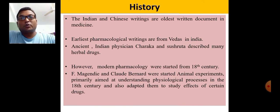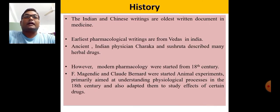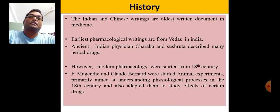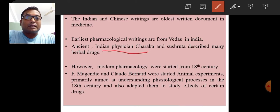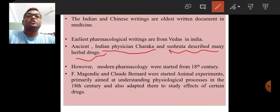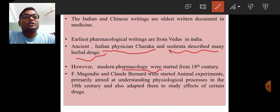Regarding history, the Indian and Chinese writings are the oldest written documents in medicine. The earliest pharmacological writings are from the Vedas in India, particularly the Atharva Veda, which is considered the oldest written pharmacological document. Ancient Indian physicians Charaka and Sushruta described many herbal drugs and medicinal plants in their books, the Charaka Samhita and Sushruta Samhita. Modern pharmacology, however, started from the 18th century.